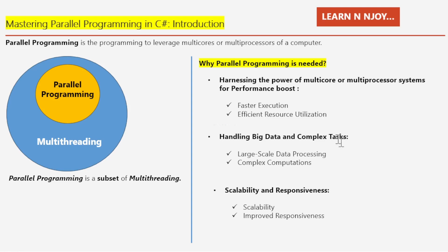Number two: Handling Big Data and Complex Tasks. Think about huge tasks — handling large-scale data processing or crunching complex computations. Parallel Programming steps in as the hero here. When we talk about large-scale data processing, let's suppose whether it's analyzing oceans of data or churning through massive data sets, Parallel Programming handles these tasks efficiently. Complex Computation — do you have mathematically intense operations? No problem. Parallel Programming takes the complexity in its stride.